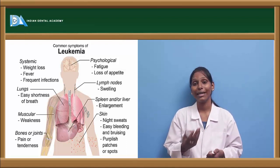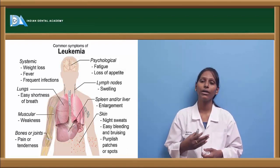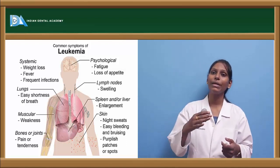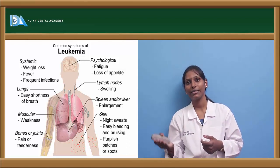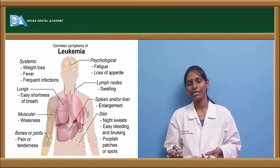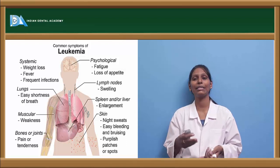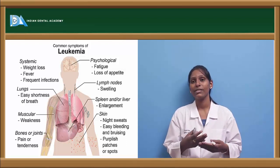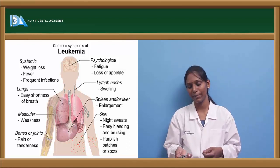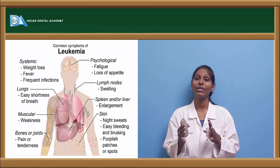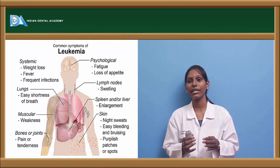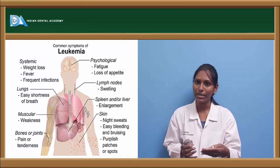Skin symptoms include night sweats and easy bleeding or bruising due to thrombocytopenia. Because of the abnormal proliferation of leukocytes, there is an increased load on the bone marrow, causing decreased RBCs and thrombocytes. Symptoms of thrombocytopenia such as purpura, hematomas, and bruising can be seen, along with purplish patches on the skin. Symptoms of anemia such as shortness of breath, pallor, and fatigue are also present. In severe chronic cases, splenomegaly and hepatomegaly occur, though these are less common in acute leukemia due to the shorter disease course.